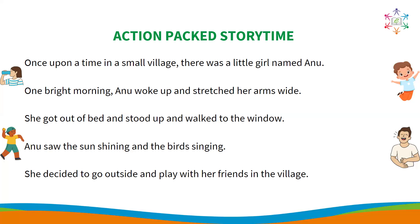'One bright morning, Anu woke up and stretched her arms wide' — while teaching this sentence, stand up and stretch your arms wide, then slowly lower them down. 'Then she got out of bed and stood up and walked to the window' — pretend to get out of bed, move to one side of your space, and act like you are walking towards a window. Open the imaginary window and look outside. 'Anu saw the sun shining and the birds singing' — look around as if seeing the sun and hearing the birds, pretend to shield your eyes. 'She decided to go outside and play with her friends in the village' — move around as if stepping outside, pretend to greet your friends and play with them.